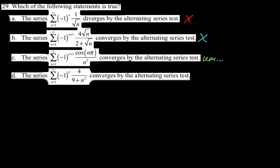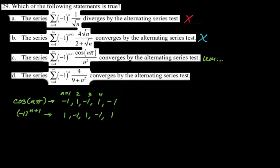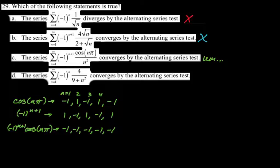Let's look at why choice C — (−1)^(N+1) times cosine(Nπ) over N² — doesn't converge by the alternating series test. Cosine of Nπ for N = 1, 2, 3, 4, 5 gives −1, +1, −1, +1, −1. And (−1)^(N+1) gives +1, −1, +1, −1, +1. When multiplied together, you get −1, −1, −1 — it's not even alternating. It's a trick. D converges by the alternating series test, so that is our answer.